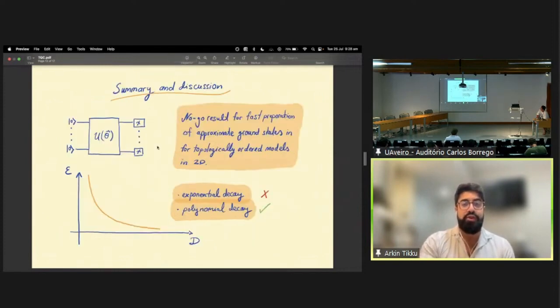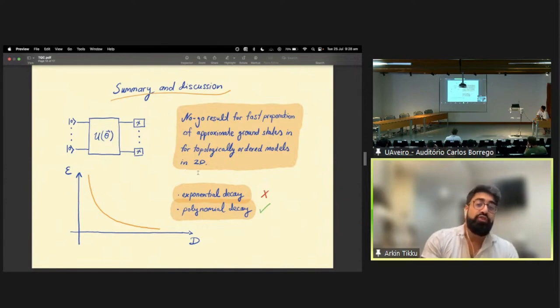Now, in summary, we therefore have shown a no-go result for the fast preparation of approximate ground states for topologically ordered models in 2D. And we've furthermore shown that for such models, in general, we cannot expect an exponentially fast convergence to the solution and only a polynomial decay can be expected.